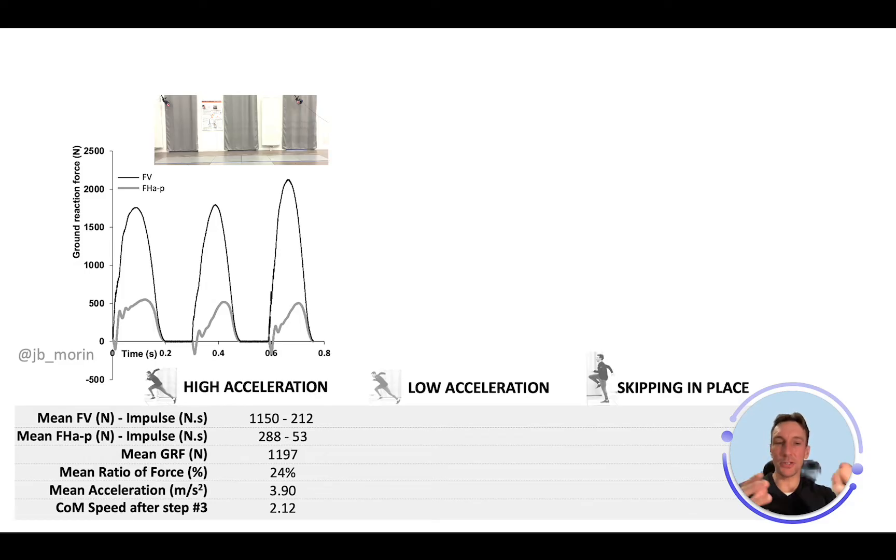The mean horizontal force and impulse is much lower, so the magnitude of the force is lower. The ratio of force, the percent of the ground reaction force directed forward, represented by the horizontal component, is about 24 percent.